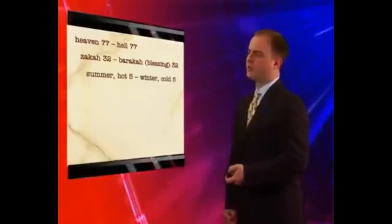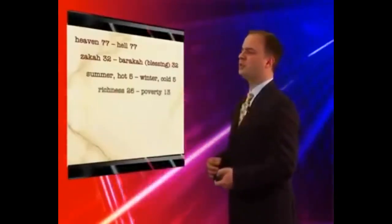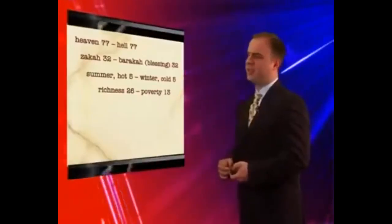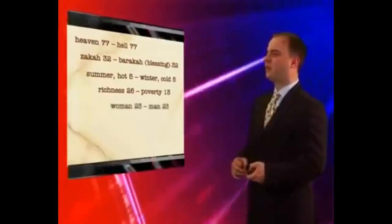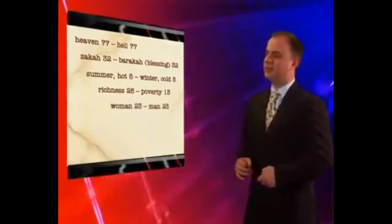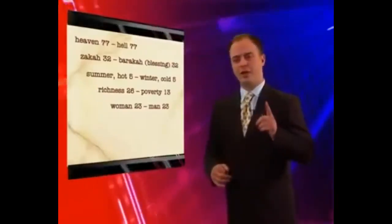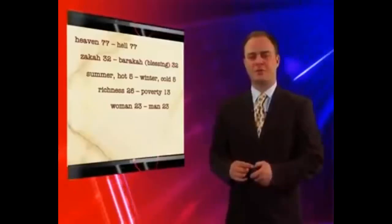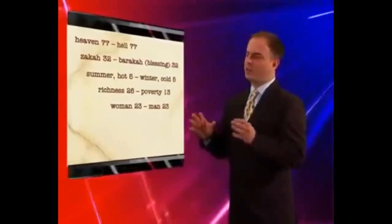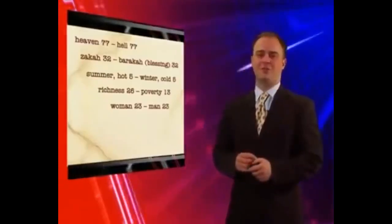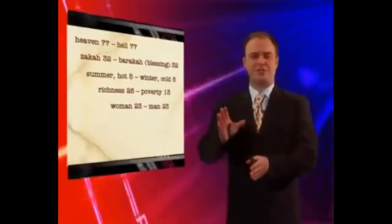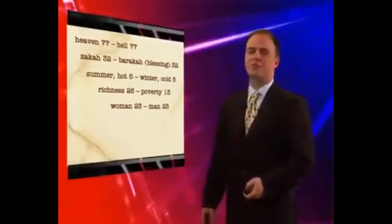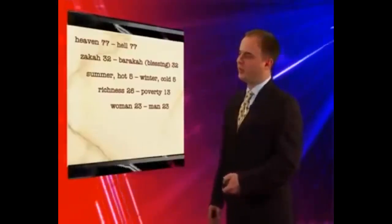Summer hot and winter cold, those words are equally repeated five times. And richness and poverty, richness is repeated 26 times whereas poverty is half of 26, which is 13. And women and men are repeated equally 23 times. Do you know what those numbers represent? Let me remind you from the chromosome numbers of a human being. A human body contains 46 different chromosomes. Half of this 46, which is 23, comes from the father, and the other half, 23, comes from the mother. You got the same repetition number for women and men, 23 and 23. If you add 23 to 23, you're gonna have 46, which gives you the chromosome number of a human being.